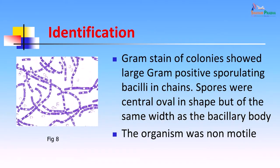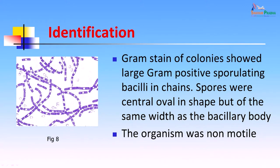After smears were made from these cultures, the picture was very different from the original smear. Here, a lot of spore-containing bacilli were seen. The Gram stain of the colony showed large Gram-positive spore-containing bacteria in chains. Spores were central and oval in shape, but of the same width as the bacillary body — they did not enlarge the size of the bacillary body as we saw in Clostridia, where spores were larger and gave a spindle shape. These spores are characteristically only seen in culture medium and are never seen in tissues. In tissues, the capsulated appearance is seen, while in culture medium you see the spores. Spores are produced in adverse conditions and can be demonstrated using special spore stains like the acid-fast stain. The organism is non-motile.